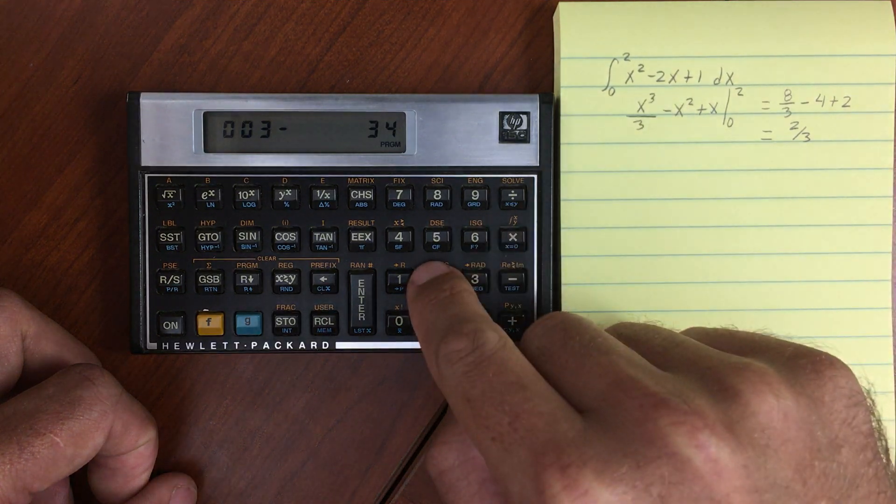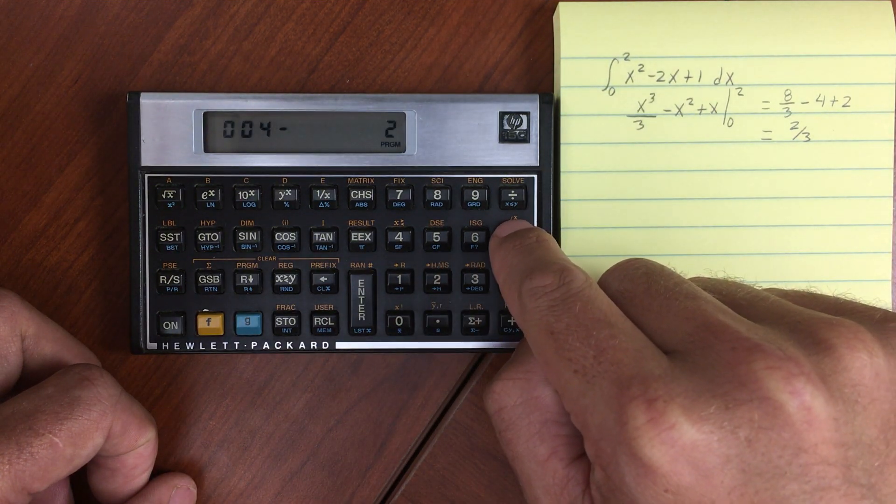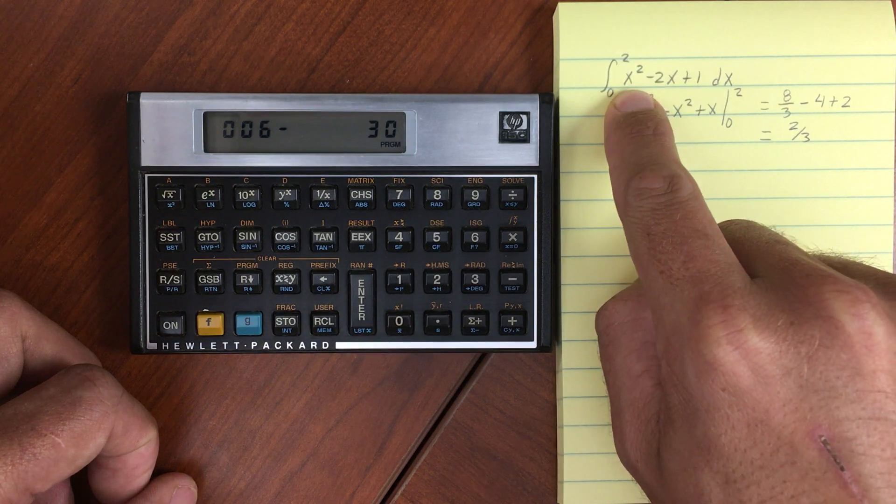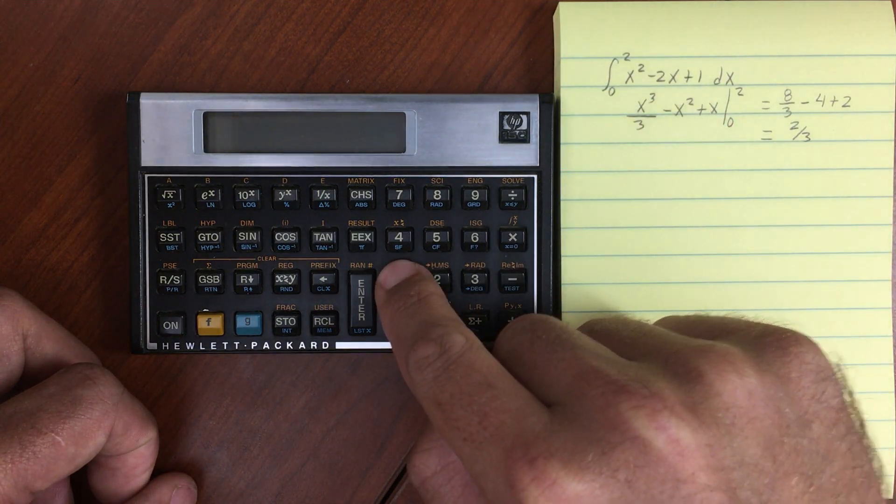Now we're going to multiply two by it, and then subtract that from our previous X squared that we did. And then add one.